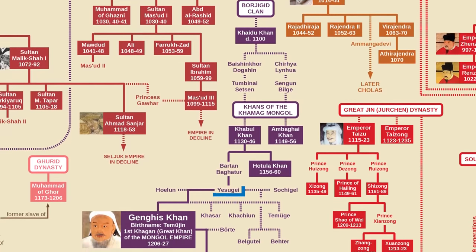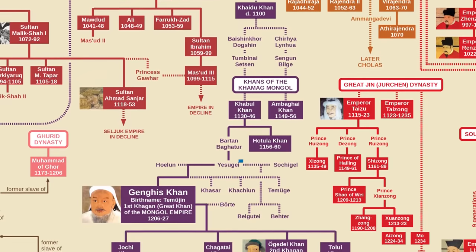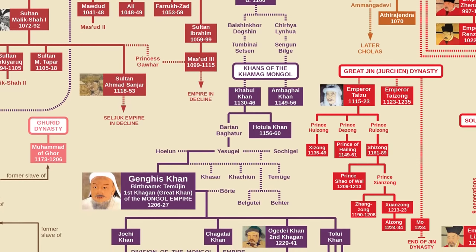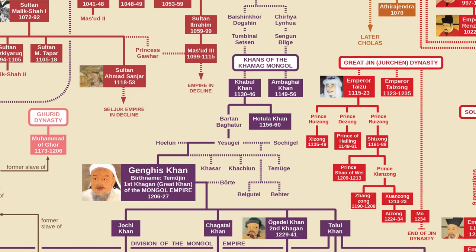Genghis's father Yasuge wanted to unite the Mongols and claim the title of Khan, but so did everyone else. He kidnapped a rival's newlywed wife around 1159 and made her his chief consort, meaning only her children would be considered legitimate heirs. One of those children was Temujin, born around 1160. According to legend, Temujin was born grasping a blood clot in his fist, which meant he would become a great leader — and, as with prophecies written after the fact, it came true. Yasuge died when Temujin was around 10, apparently poisoned by the Tatars.